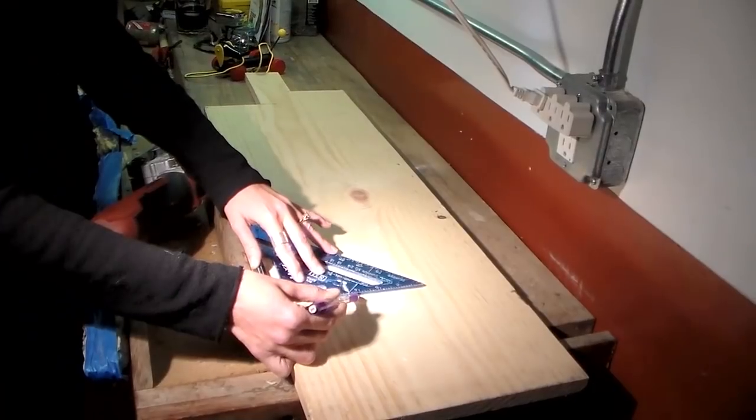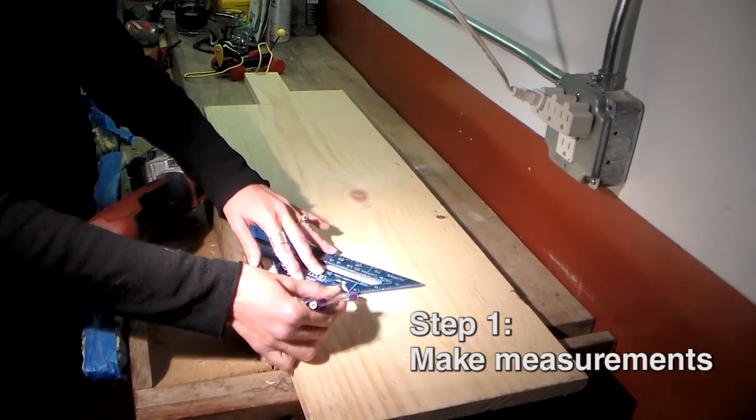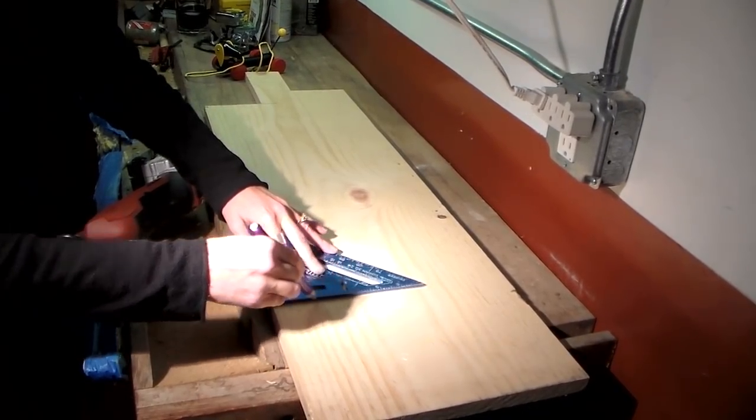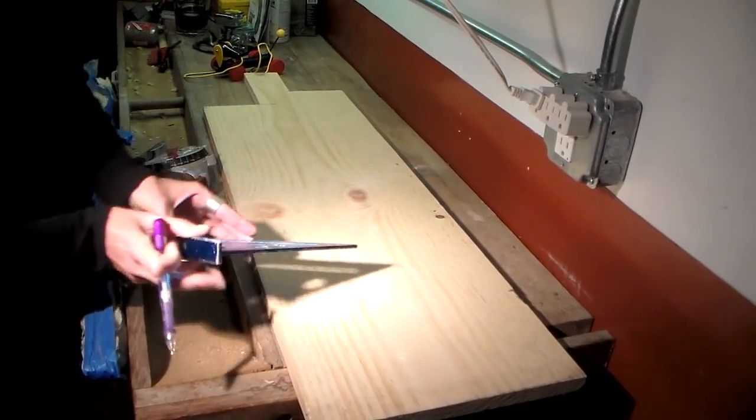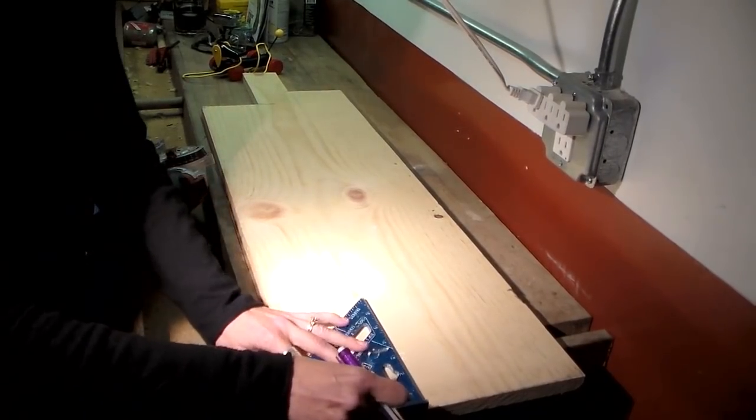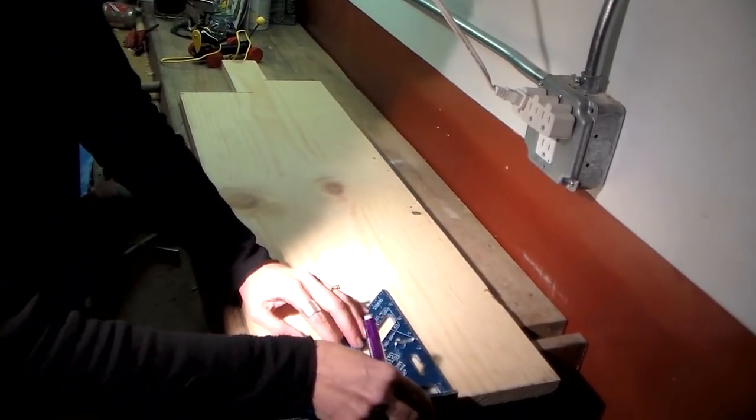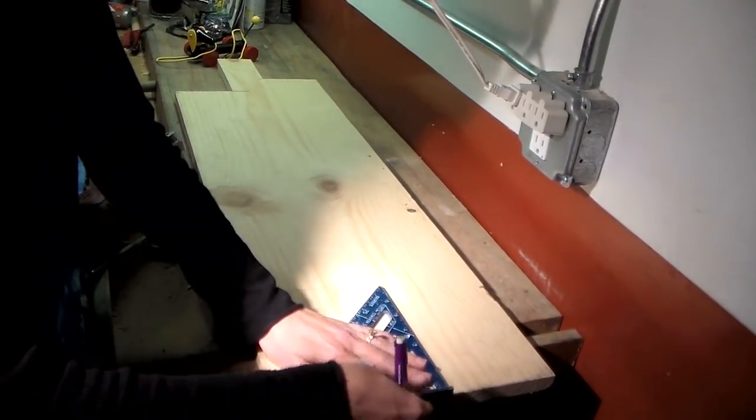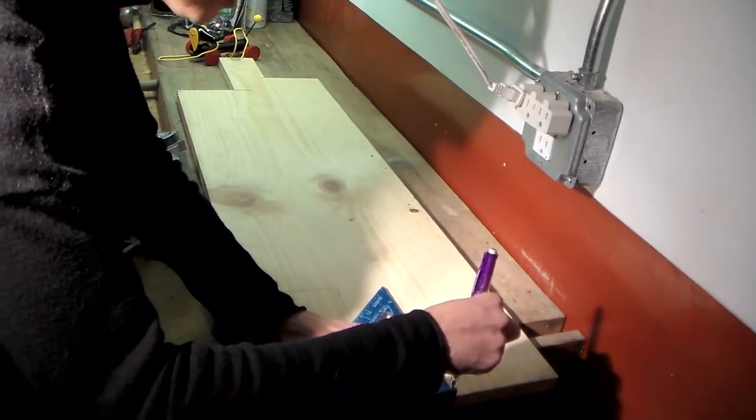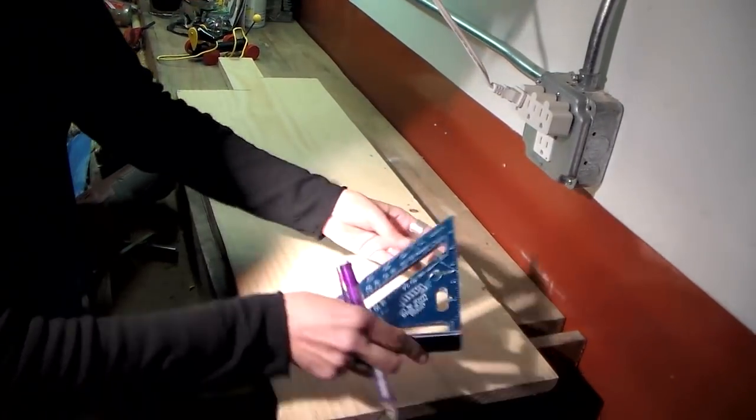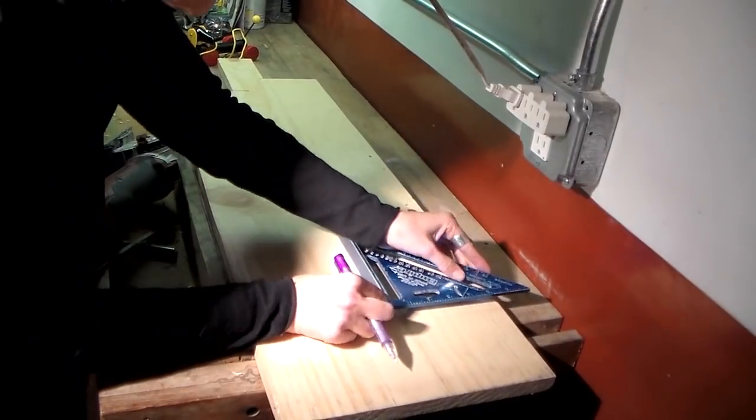So first step is to measure the wood. Maggie and I decided we'd like our bookends to be four inches by seven and a half. Next step is to measure the base of our bookend. We decided that the best measurement was five by four. So there's five inches lining up here and we'll go four.